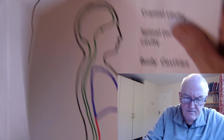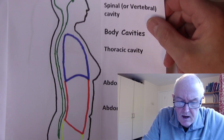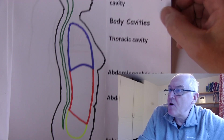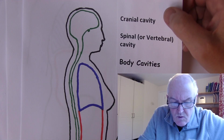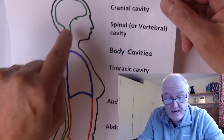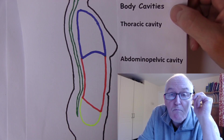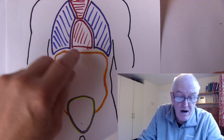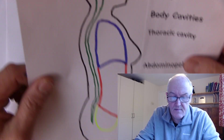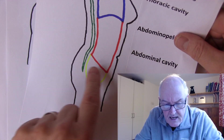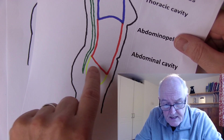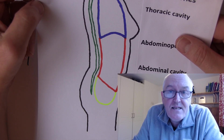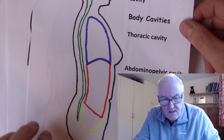That is the first part of this video. In the next part we will look at the membranes associated with the organs in these cavities: the meninges surrounding the brain and spinal cord — important in meningitis; the pleural membranes around the lungs; the pericardial membrane around the heart; and the peritoneal membranes in the abdominal and pelvic cavities, which become inflamed in peritonitis.